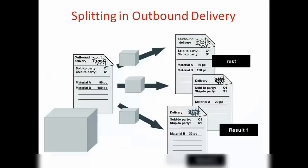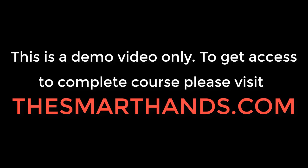Let me take a question from Manish: serial numbers are generated during GR and PP order — GR meaning goods receipt. So serial numbers are generated for goods receipt as well.